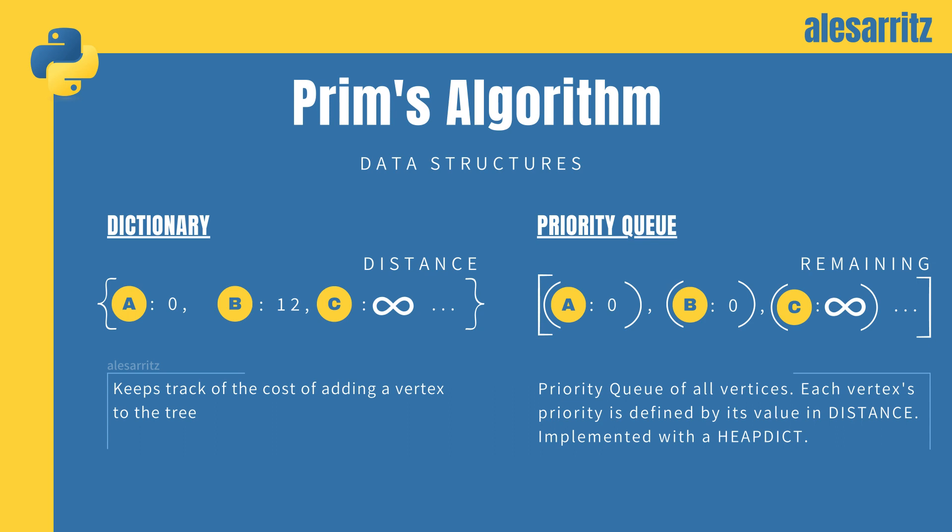Finally, we'll need a priority queue, remaining, which will contain the remaining vertices to add to the tree. It can be implemented with several data structures, like arrays, heaps, and others, but I use a heap dictionary. It will be a priority queue of all vertices of the graph, where each vertex's priority is defined by its value in the distance dictionary.